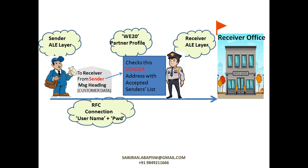The security similarly checks with his accepted sender list. He will not receive whatever letter the postman or the ALE layer gives to him; he will check the sender address against what is maintained in the accepted sender list, otherwise he will not accept it. That list is nothing but the WE20 partner profile at his end. So we have seen two partner profiles — one at the sender end and the other at the receiver end. Both should include the sender and receiver, as well as the message type, that is customer data.